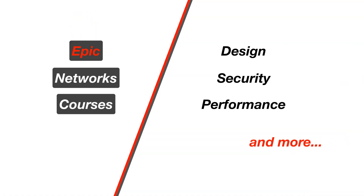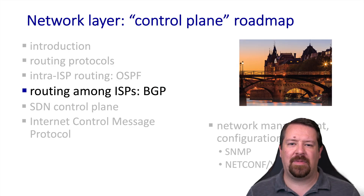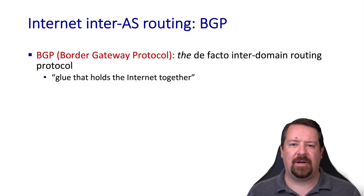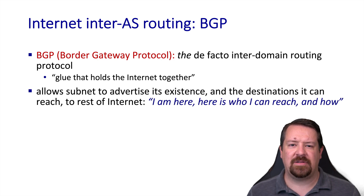In this video, we'll be discussing the glue that holds the internet together, meaning the BGP routing protocol. Now we come to routing amongst ISPs, or inter-ISP routing. The internet standards say that for an autonomous system to participate in the internet, they must use the Border Gateway Protocol, or BGP. BGP enables all of these separate networks to talk to one another by allowing each AS to advertise the subnets that they own to the rest of the internet, so that traffic can find them.